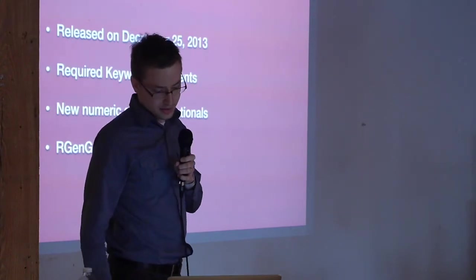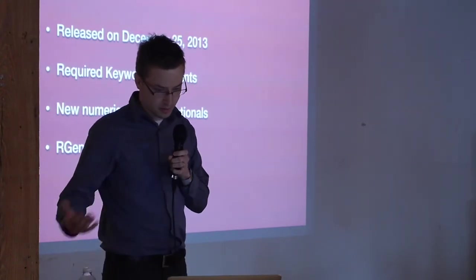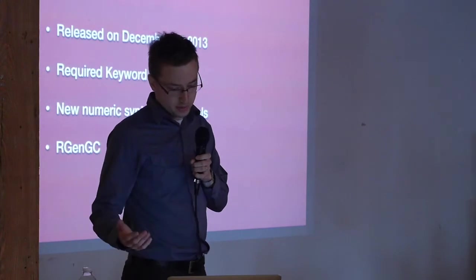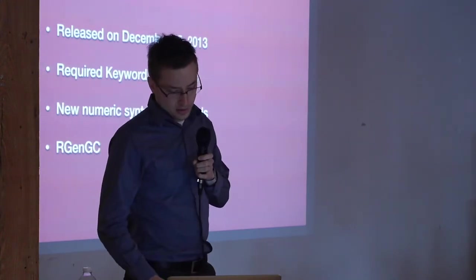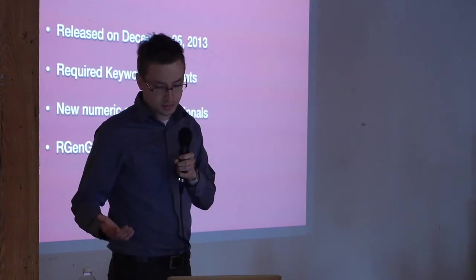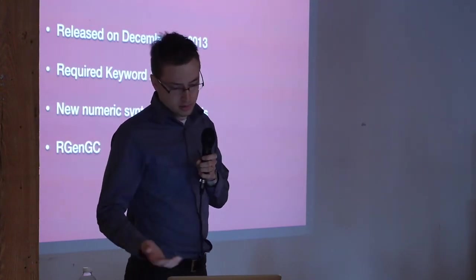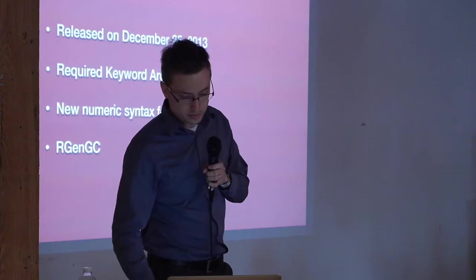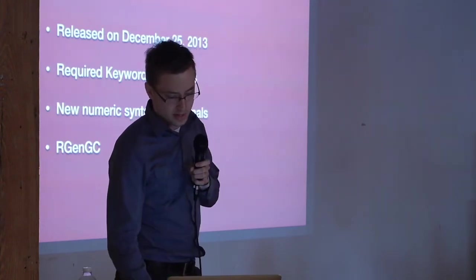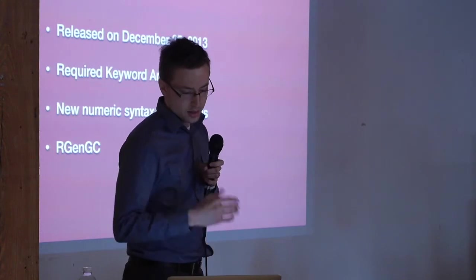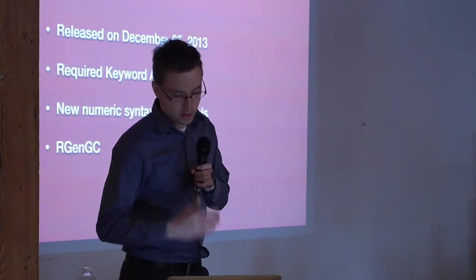Ruby 2.1. This is a Christmas release, which is common with Ruby. Actually back since Ruby 1.0, there have been releases every Christmas. The refinements are no longer experimental, because they've been in there since 2.0. You have required keyword arguments, new numerical syntax for rationals, and the new garbage collector, rgen-gc.